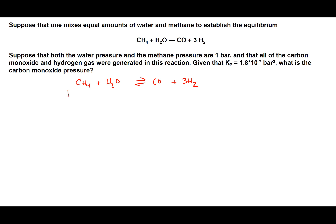Initially, the conditions are that we have 1 bar of CH4, 1 bar of H2O, and then 0 CO and 0 H2. For the change row, we're going to lose X amount of CH4 and X amount of H2O, because there's not really a limiting reactant here. The ratio of CH4 to H2O is 1 to 1, so we lose 1X equivalent of each.